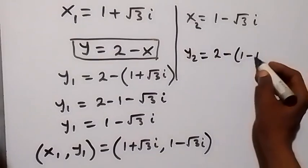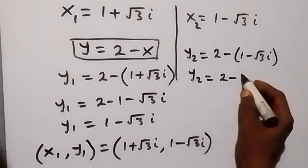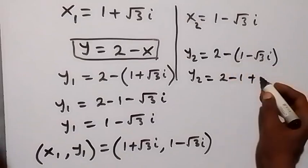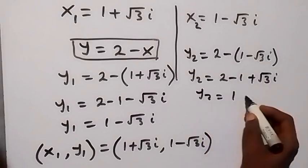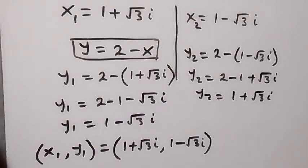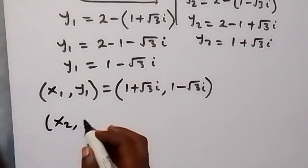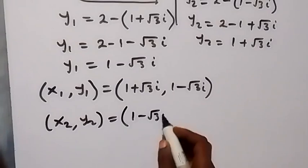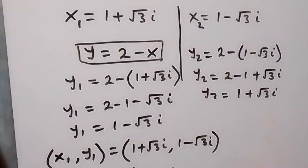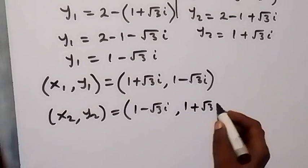So the first solution is x1 equals 1 plus root 3i and y1 equals 1 minus root 3i. Now y2 equals 2 minus x2, that is 2 minus (1 minus root 3i), giving y2 equals 1 plus root 3i. The second set of solutions is x2 equals 1 minus root 3i and y2 equals 1 plus root 3i.